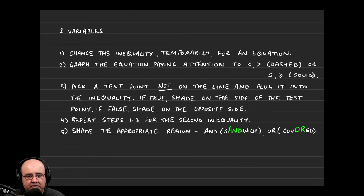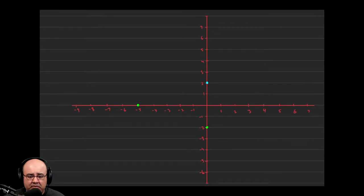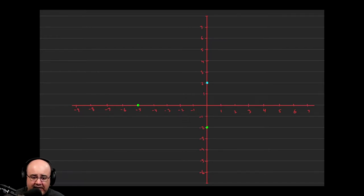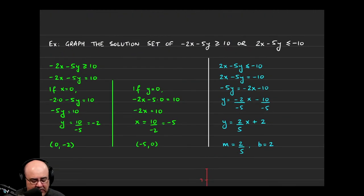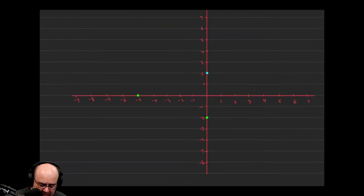So let's recap. The first thing I needed to do was change the inequality temporarily to an equation — we did that. Now we need to graph the equation, paying attention to whether it's less than or greater than, or less than or equal to, or greater than or equal to. The two points the line passes through are negative 5 comma 0 and 0 comma negative 2. Because I have a greater than or equal to in the original inequality, the line has to be a solid line. If it had just been greater than, I would make it a dashed line.